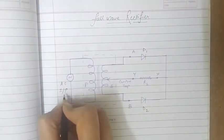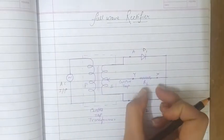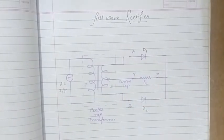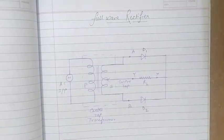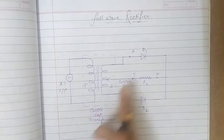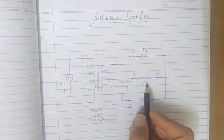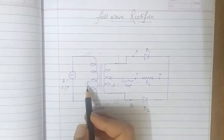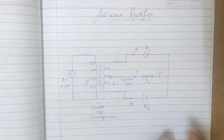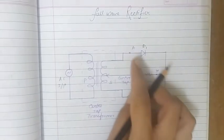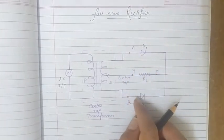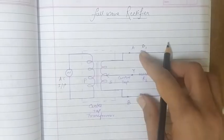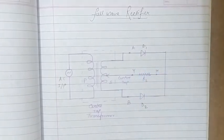This is the AC input source, and the output we are getting is across RL at points X and Y. A full wave rectifier consists of a transformer, two junction diodes D1 and D2, and a load resistance RL. The input AC signal is fed to the primary coil, similar to that of the half wave rectifier, and the two ends A and B of the secondary coil are connected to the P ends of diodes D1 and D2.